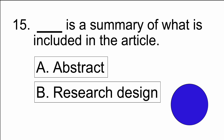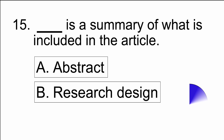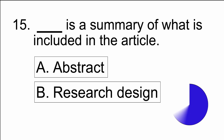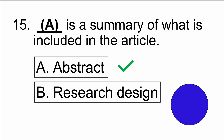And number fifteen: blank is a summary of what is included in the article — A) abstract, or B) research design. The answer is A) abstract.